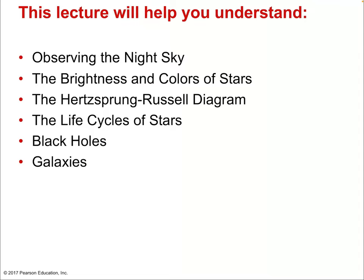We're going to start by talking about constellations, because the night sky is full of stars. We'll talk about the night sky, then the brightness and color of stars, which is a directly observable fact from the surface of Earth. Then we'll get into the Hertzsprung-Russell diagram — the HR diagram — which is to astronomy as the periodic table is to chemistry. It's the astronomer's periodic table.